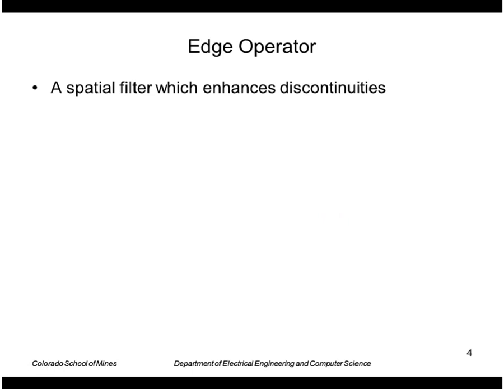An edge operator is a spatial filter which enhances discontinuities. For example, we've seen the use of the digital approximation to the first derivative, which is a 1x2 operator that looks like this.